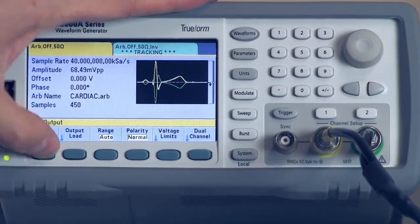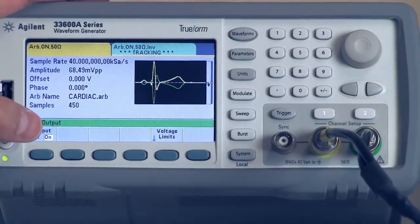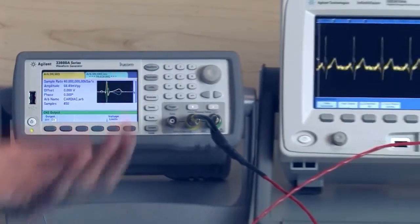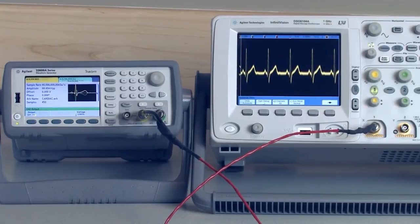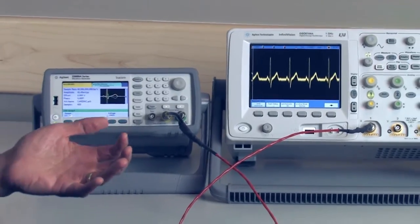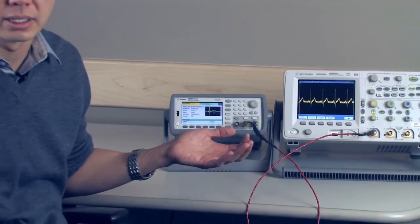So all you have to do next is just turn on both outputs. And you can see on our scope here that it's our cardiac signal. That's really all there is to creating a differential signal on a trueform generator.